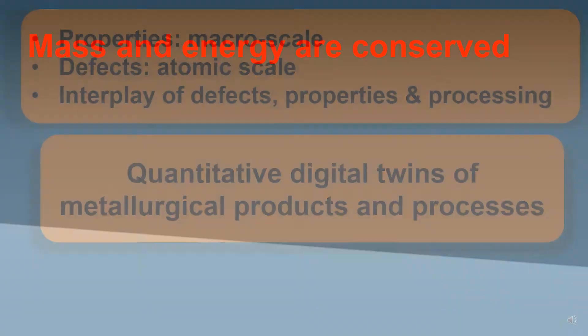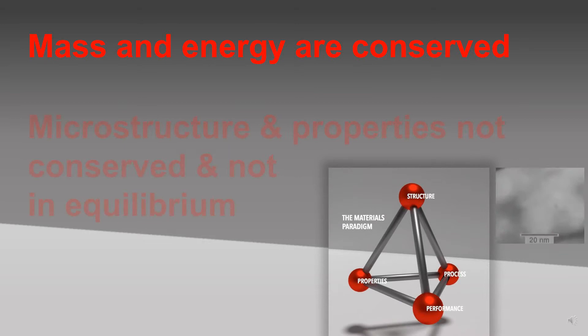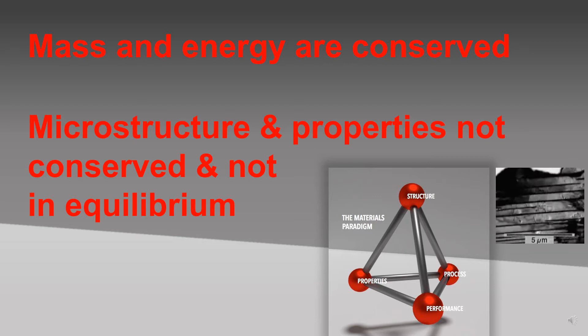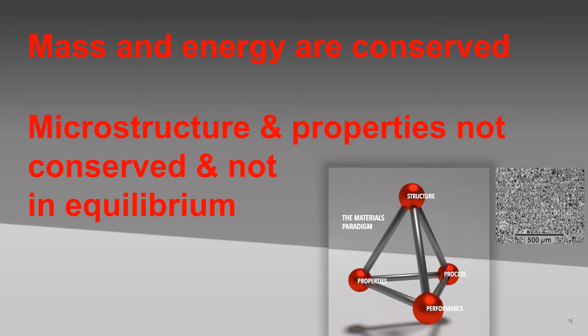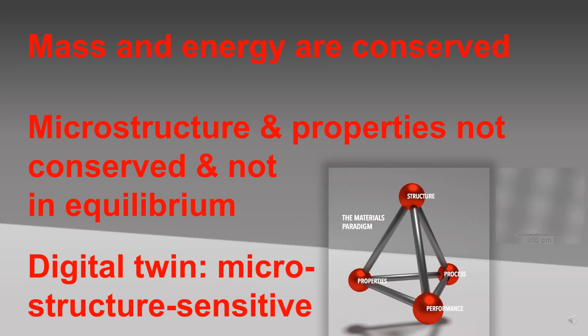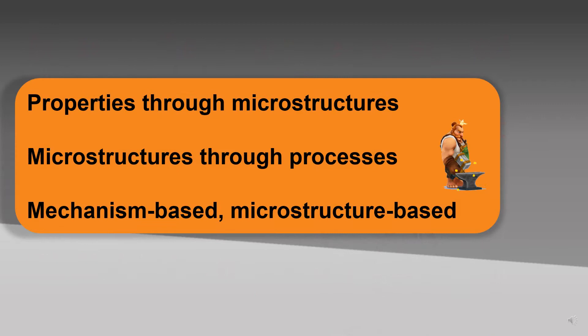Now we know that mass and energy is of course conserved, but microstructure and properties are of course not conserved and they are also not in equilibrium. That means we need a very good description of kinetics in order to be able to put this into advanced theory that we can treat by corresponding boundary condition treatments. That means any digital twin, the computational material science of complex materials in their transients must be microstructure and mechanism sensitive. So the take home message here is that the properties depend on the microstructures and microstructures are imprinted through the processing of the material. And when we want to put this into mean field theory, we need to find mechanism based formulation and microstructure based formulation.